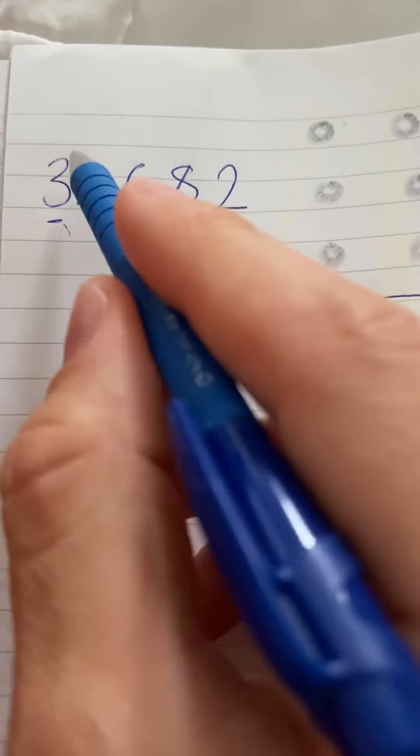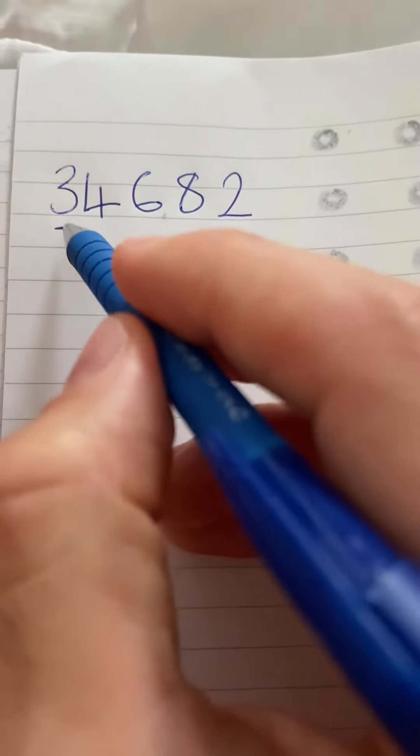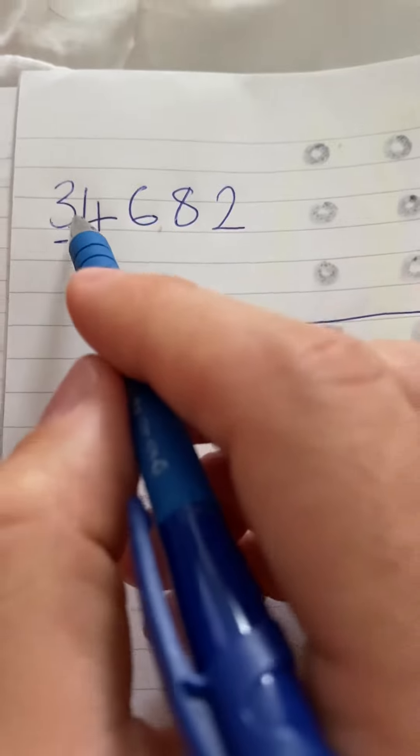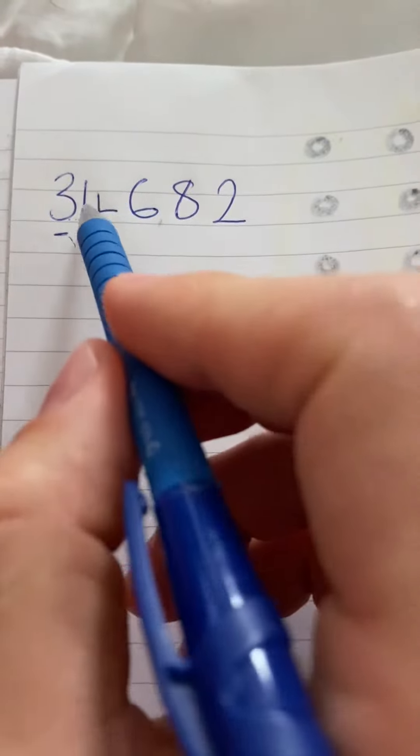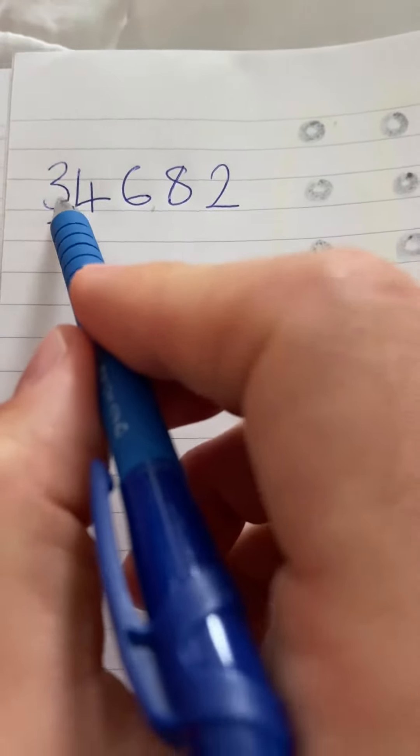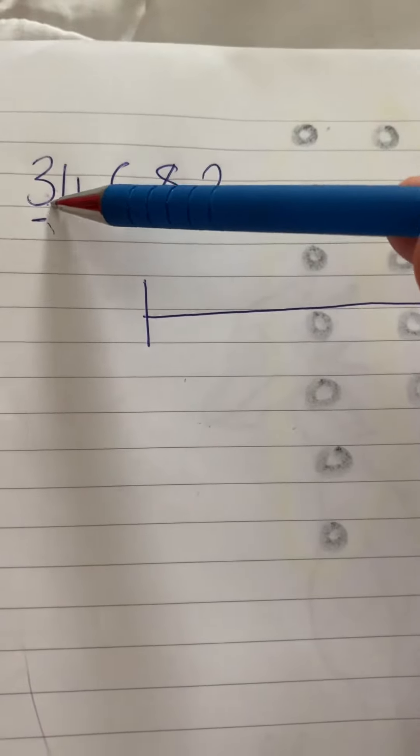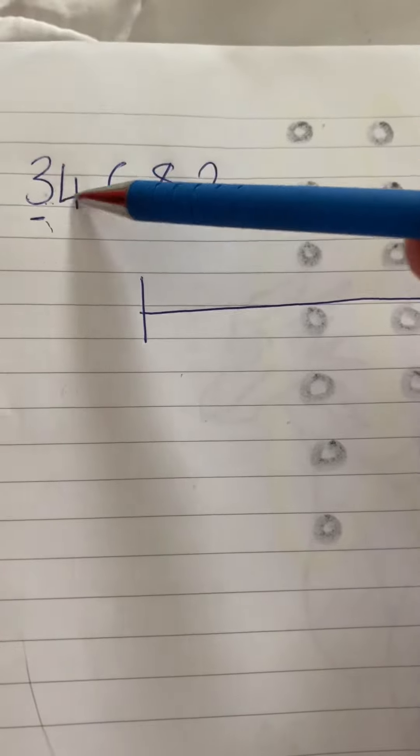And this is our significant figure. Okay, so three out of the 34,682. So this is worth 30,000. So then what we do is we just round to whatever we have there. So it's either 30,000 or 40,000.